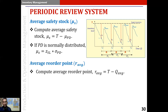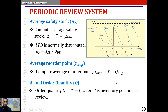The average reorder point is the difference between the target inventory level and the average order quantity. As you can see on the vertical axis, the reorder point plus the order quantity equals the target inventory level. So the average reorder point is T minus the average order quantity. The actual order quantity varies from cycle to cycle and is computed as the target inventory level minus the current inventory position at the point of review.